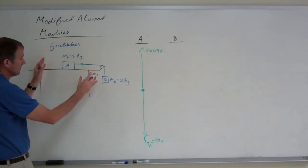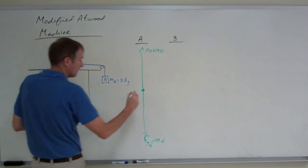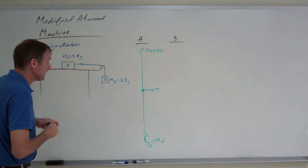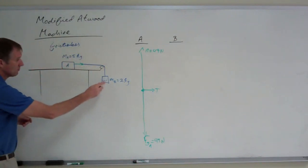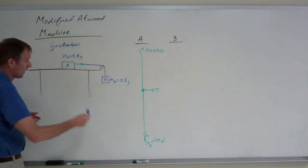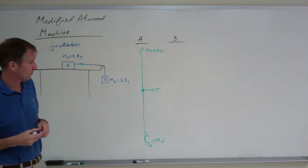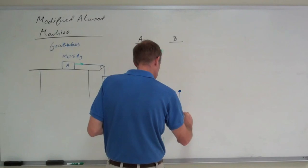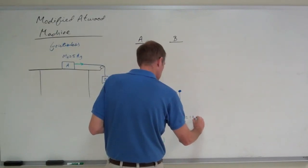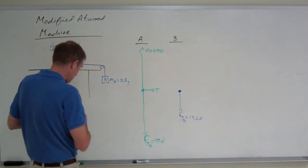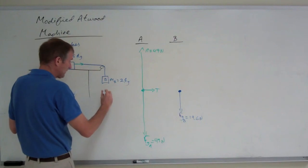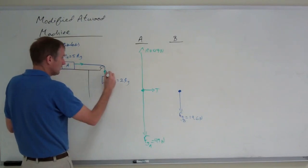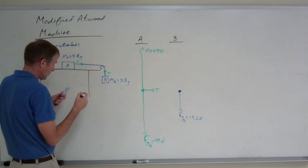When released, block A will slide to the right and block B will go down, so there is tension acting to the right on block A. For block B: gravity pulls it down, and with a mass of only 2 kilograms, its weight is 2 × 9.8 = 19.6 newtons. There is tension pulling up on block B because the string connects it through the pulley. Although block B is going to accelerate downwards when released, it is not in free fall — tension acts upward on B and to the right on A.